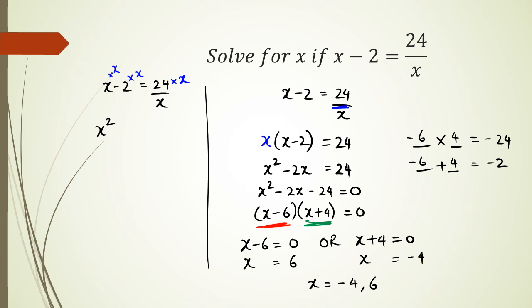And when I do that, x times x is x squared, negative 2 times x is negative 2x, and then 24 times x divided by x, that's where the x's cancel out each other. And I've got just 24 left over here. And as you can see, this is pretty much the same step from here onwards.